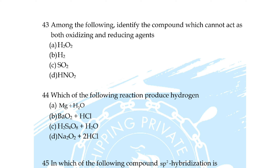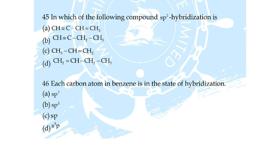Correct answer for question 42 is option A: ortho hydrogen and para hydrogen. Question 43: among the following, identify the compound which cannot act as both oxidizing and reducing agent — option A: S₂O₂, B: H₂O₂, C: SO₂, D: HNO₂. Correct answer is option B: H₂O₂.